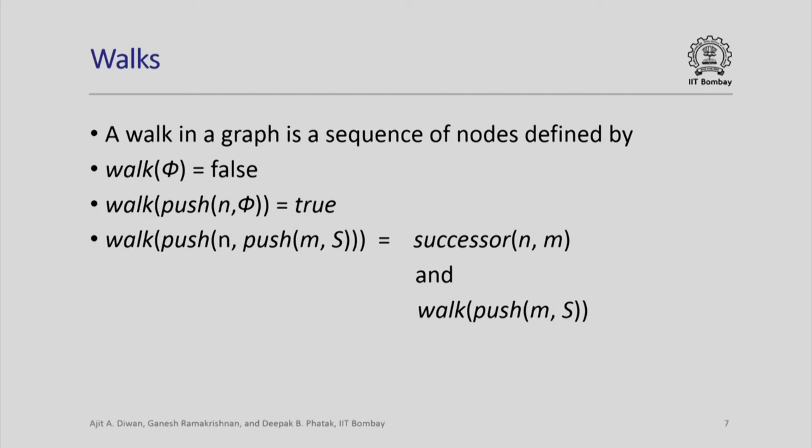The empty sequence is not considered a walk. A walk containing a single node is a walk — walk(push(n, φ)) is true — and walk(push(n, push(m, s))) will be true only if m is a successor of n and walk(push(n, s)) is true. That is, if I take a sequence with first element n and second element m, this sequence is a walk if m is a successor of n and the remaining sequence obtained by removing the first node is also a walk. Essentially, a walk is a sequence of nodes where every node is followed by one of its successors.